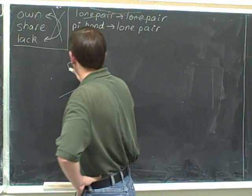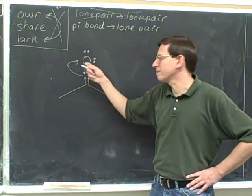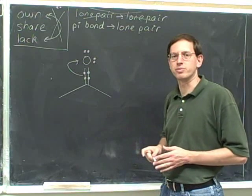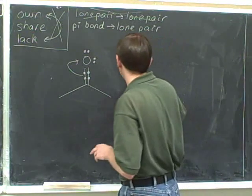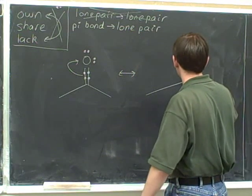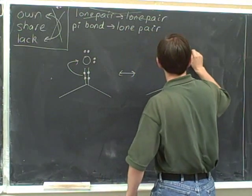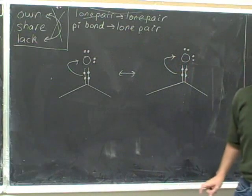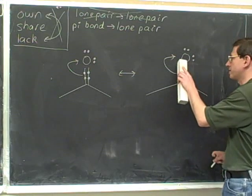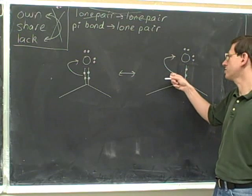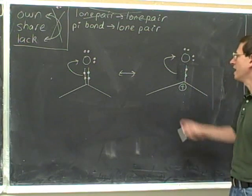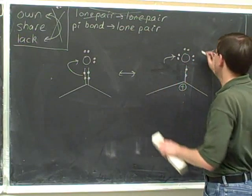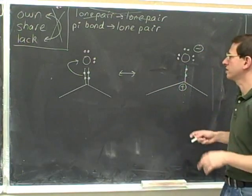Now let's try drawing a resonance structure. This is a pi bond to lone pair transition. Using the redraw and modify technique: at the tail, we erase the two electrons in the pi bond, and that atom becomes positive. At the head, pointing directly at the oxygen, we form a lone pair and put a negative charge on the oxygen. Here's the resonance structure suggested by this arrow.